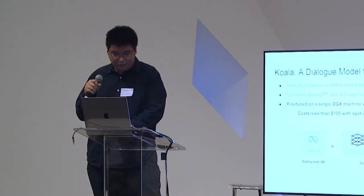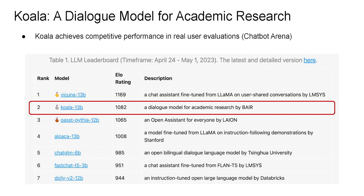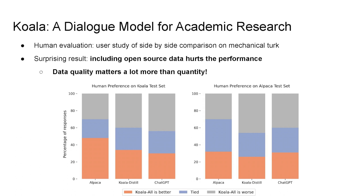How does this fine-tuned model perform? On the recently released results from the LM Chat Arena — which compares many different chatbots in a user study — we showed that Koala performs very comparably to the top-of-the-line fine-tuned LLaMA model, Vicuna. In a further study we conducted ourselves, we found that some of the data used during fine-tuning actually hurts the model's performance. This really showcases that curating a high-quality dataset is very important, which is also another reason why you should fine-tune your own language model instead of using an existing one via API.